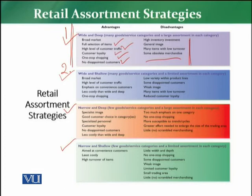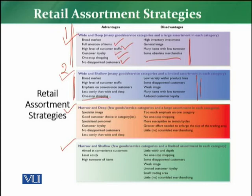This strategy also has advantages. A broad market is targeted because you have many categories. A high level of customer traffic can be gauged. There is an emphasis on convenience customers. It is less costly as compared to the wide and deep assortment method. However, because you carry many categories, inventory cost is still high. This also results in one-stop shopping — everything under one roof — and the customer will find many categories for the product solution they are looking for.